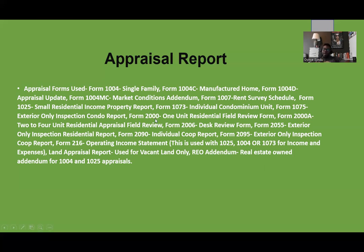Form 2000 is the one-unit residential field review form — used for one unit, whether a single family or one unit of a duplex. Form 2000A is the two-to-four unit residential appraisal field review. For any properties you're buying that are a duplex, triplex, or fourplex, those will be reviewed using form 2000A, which allows the appraiser to go out in the field, look for comparable properties, and determine the value of your multifamily property.